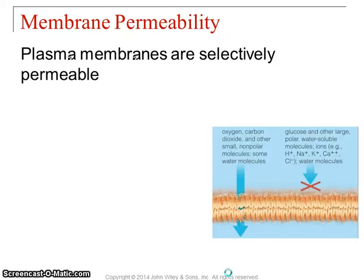Next, we're going to look at membrane permeability. Permeability means the ability to cross. An open doorway would be permeable — everybody can cross. If the door is closed, it would be impermeable — nobody can get through. Plasma membranes are in the middle: they are selectively permeable, so some things can get through whereas others can't.